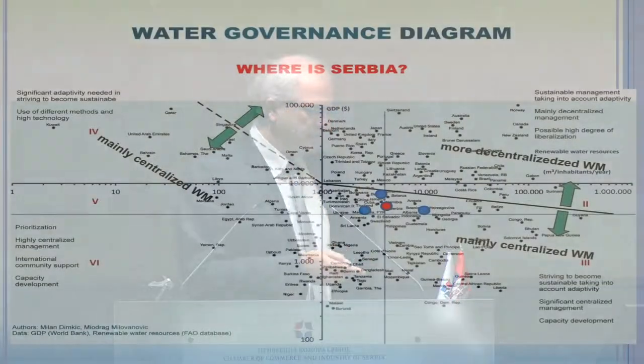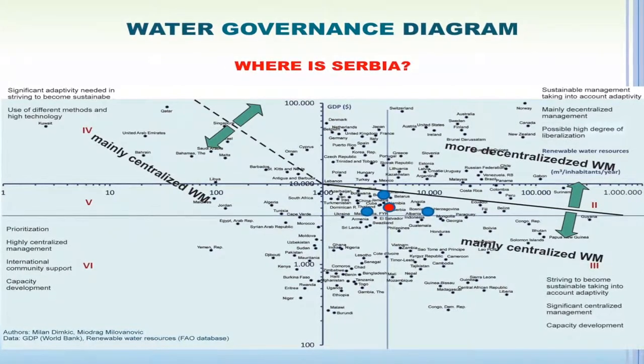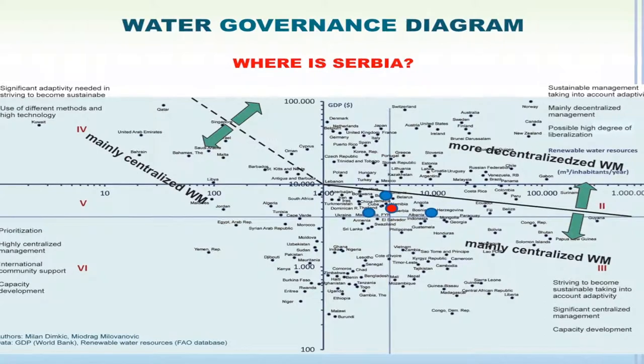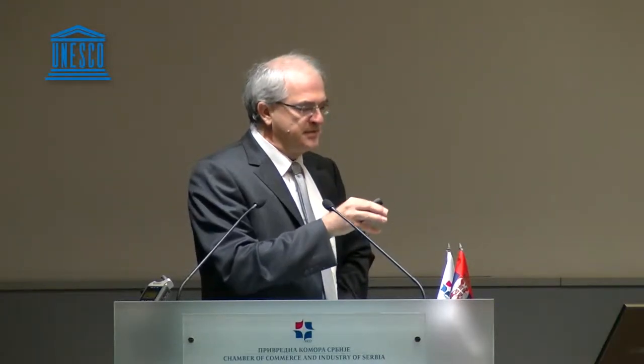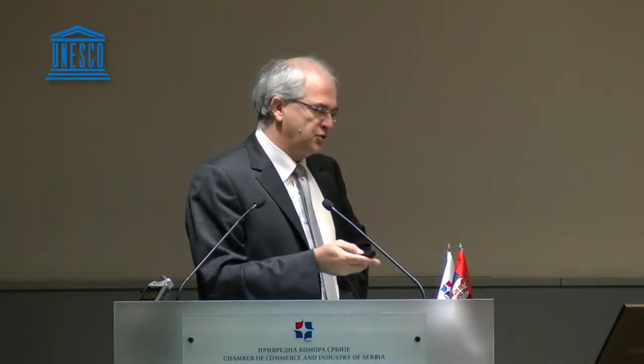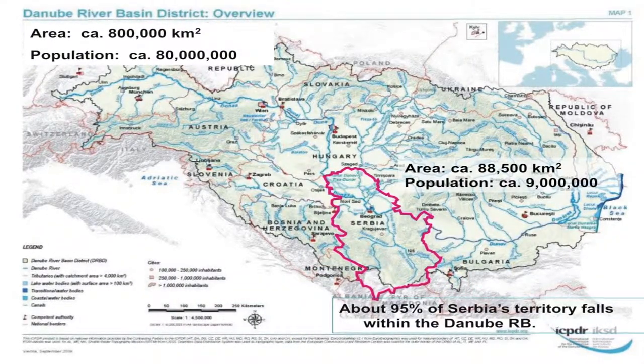The blue dots around Serbia represent neighboring countries. Upper from Serbia is Bulgaria, with a little bit less resources but a little bit more GDP. Macedonia is on the left with a little bit less resources, and Bosnia and Herzegovina has more water resources than Serbia. All these countries, as seen yesterday for different countries, show similar problems — countries with a similar place on the diagram face similar problems in water management.